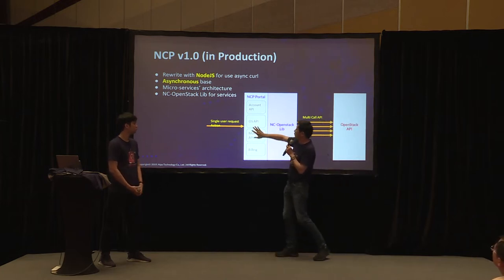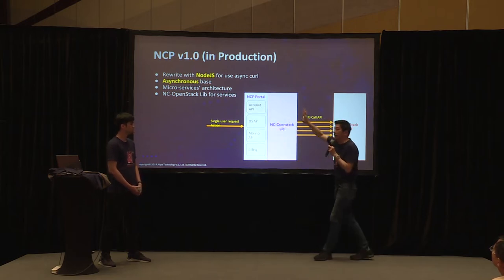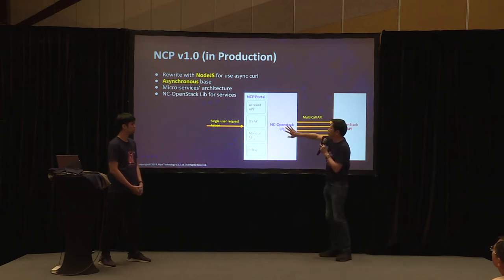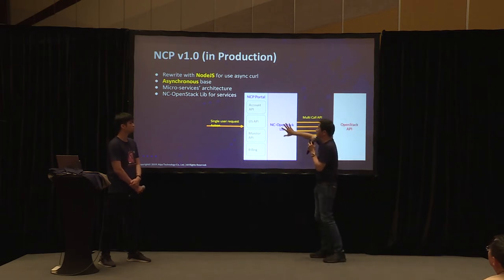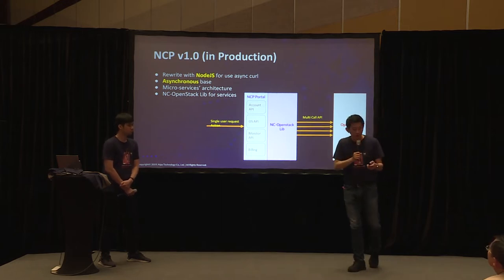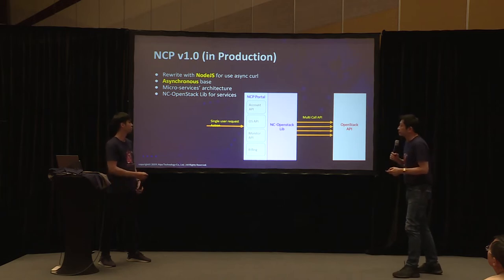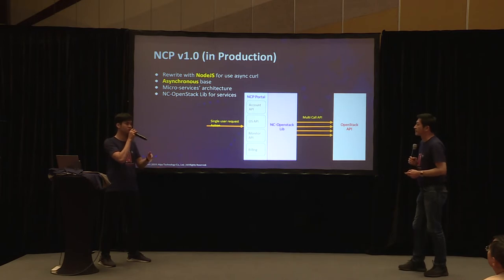We also adopted a microservice architecture and separated components. When we moved to Node.js, we started writing our own library called NC OpenStack Library. This library makes it a lot easier to call the OpenStack API. This became version 1.0 and went into production. The library also provides flexibility to access different OpenStack versions — just change the config backend a little bit.